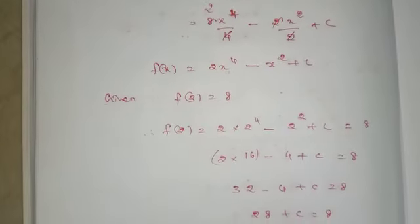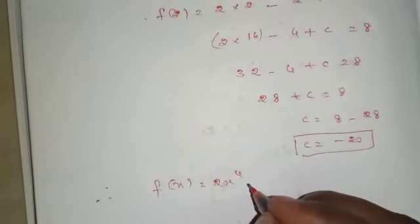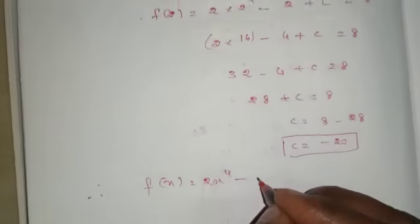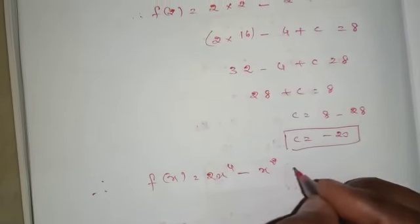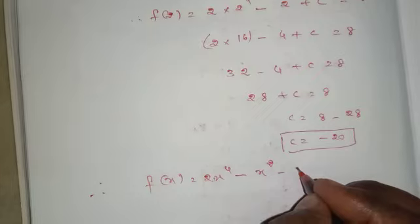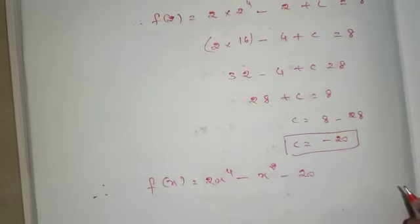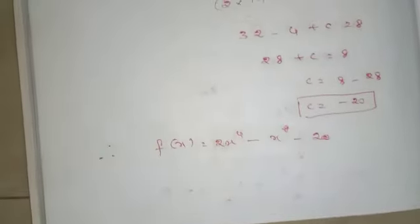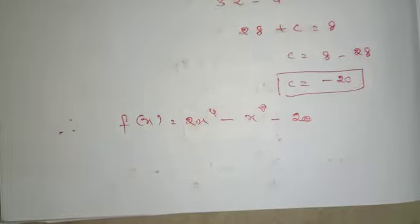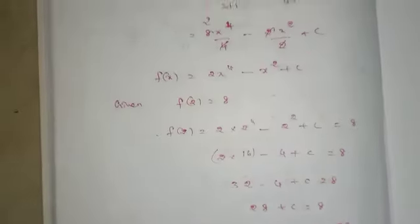Therefore, f of x equals 2x power 4 minus x square minus 20. That is the 8th sum.